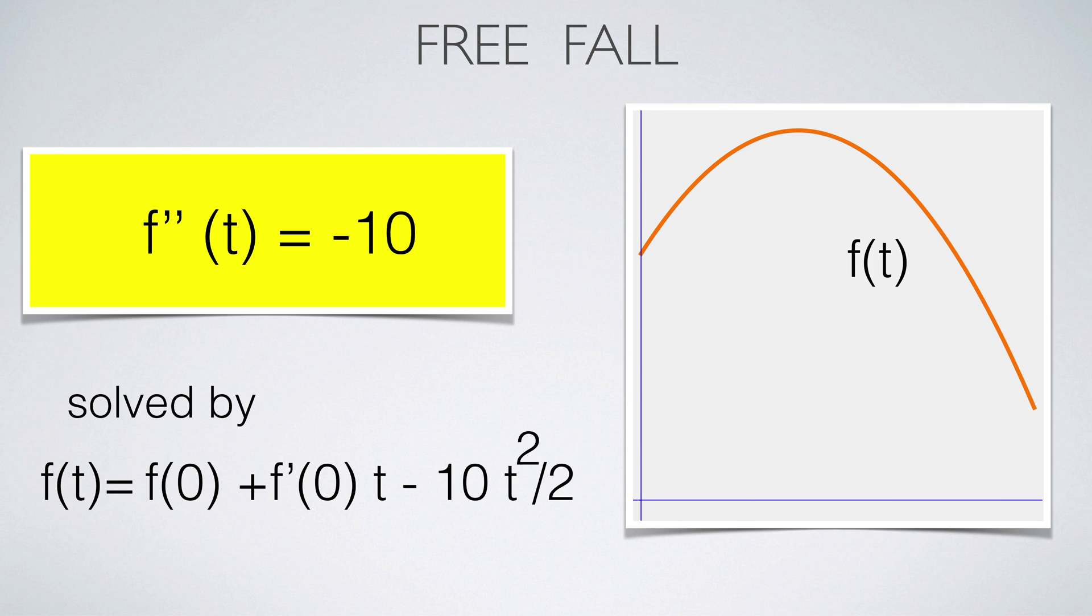Here is another differential equation. It models free fall. Also here, the solution allows us to predict the future. In this case, we can simply solve for f by integrating twice and taking care of the initial position and initial velocity.